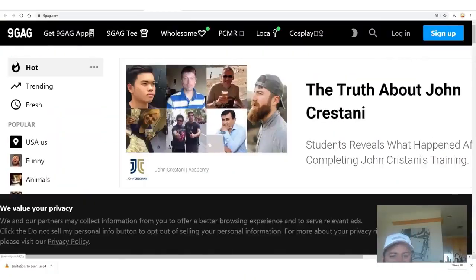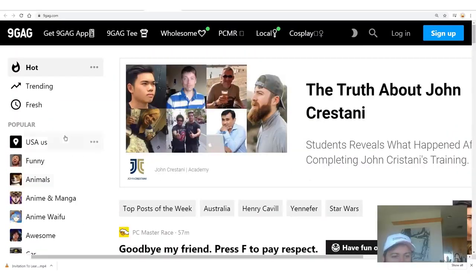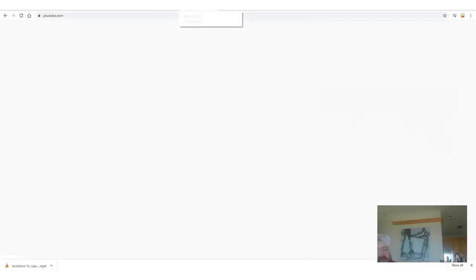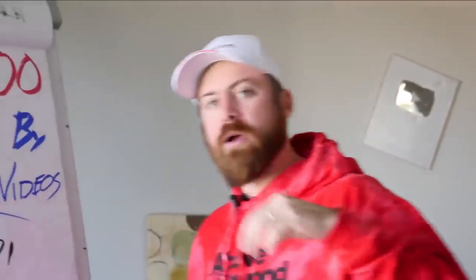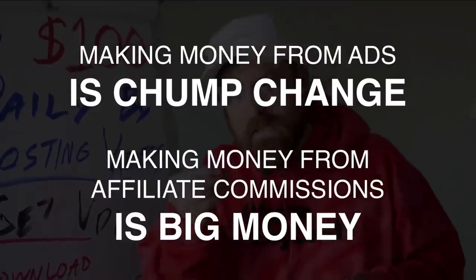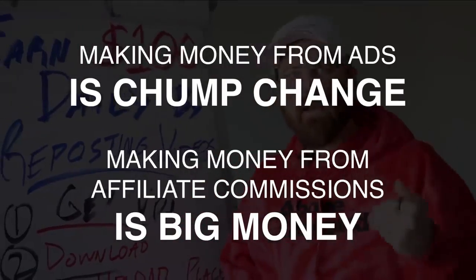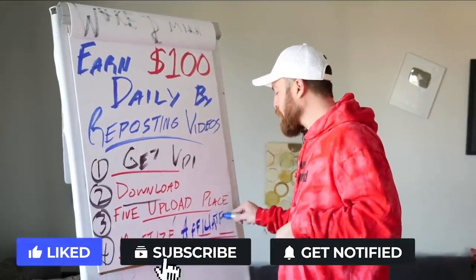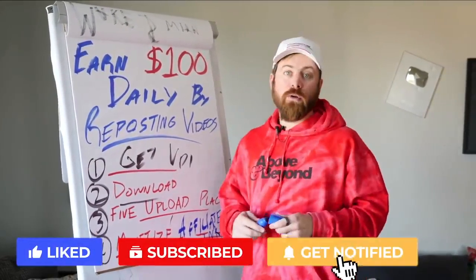Last but not least, you can even re-upload my videos to YouTube. The thing about YouTube is because I was the first person to upload my own video to YouTube, I end up making the AdSense revenue, but you end up making the affiliate commissions — which is what we're going to talk about next. The most important way of monetizing is actually not making money from the ads. Making money from ads is chump change, whereas making money from affiliate commissions is big money.